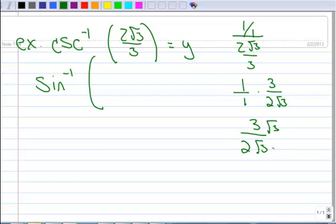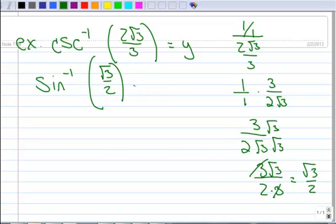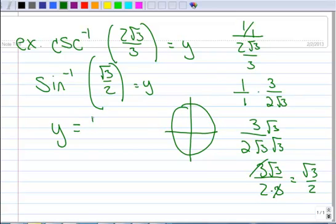And, we've got to rationalize that. So, that becomes 3 times the square root of 3 over 2 times 3. Well, this 3 cancels with that 3. So, this is square root of 3 over 2. Boy, does that look familiar. Square root of 3 over 2. And, so, looking at your circle, where is the sine square root of 3 over 2? And, you'll get that that arc is pi over 3.